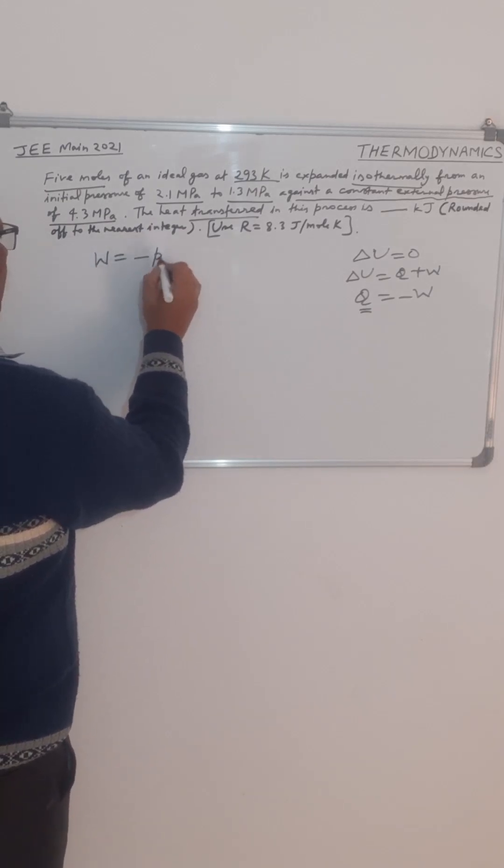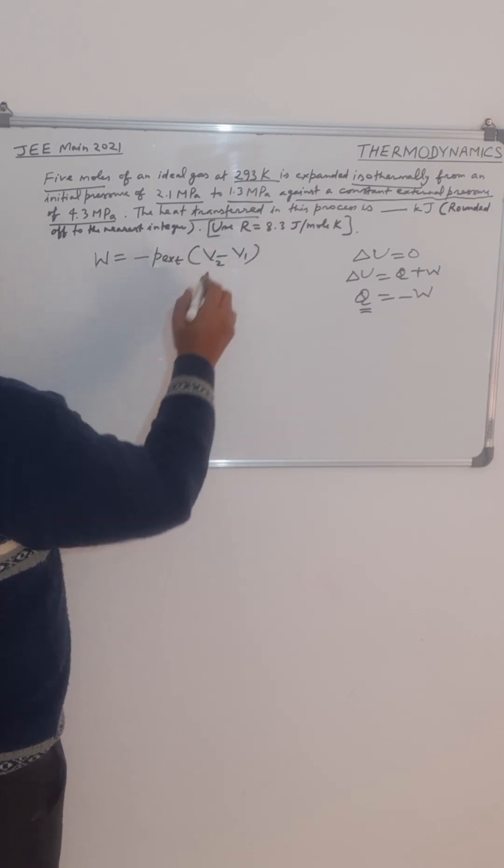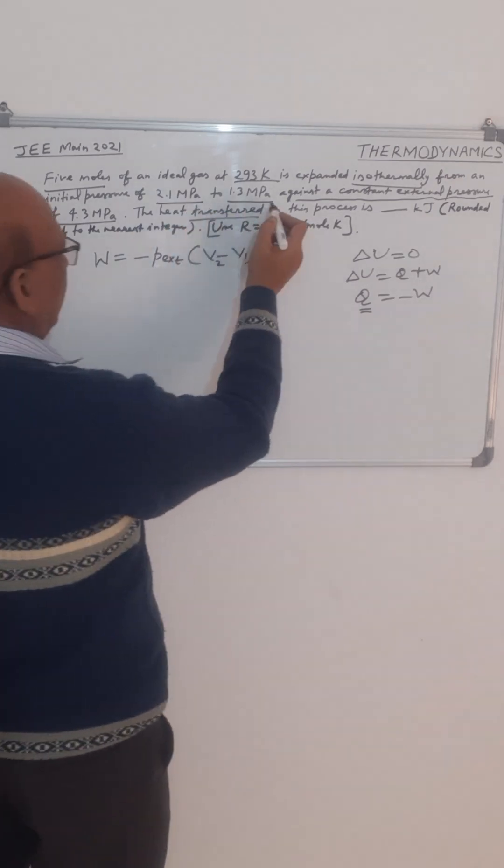So the formula for work done for an irreversible process is minus P external into V2 minus V1. But initial and final volumes are not given to us, we are given the initial and final pressures.